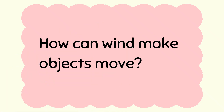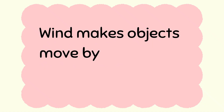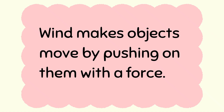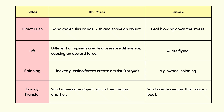How can wind make objects move? Wind makes objects move by pushing on them with force. First, simple direct push: wind molecules collide with an object — for example, a leaf blowing down the street. Second, pressure differences create an upward force, like a kite flying. Third, spinning and twisting forces create torque, like a pinwheel spinning. Fourth, energy transfer: wind moves one object, which moves another. Wind also creates waves that move about.